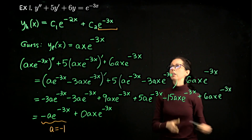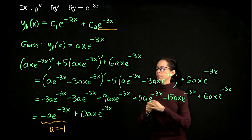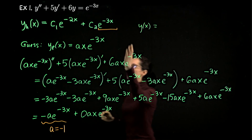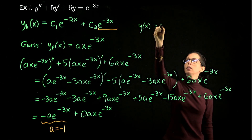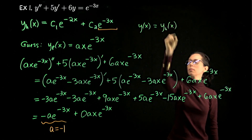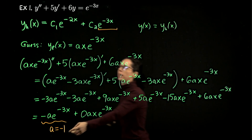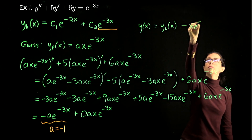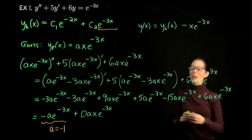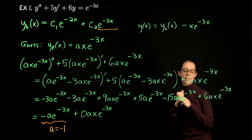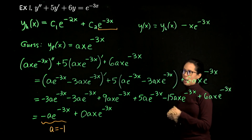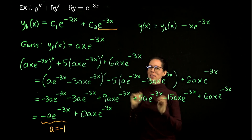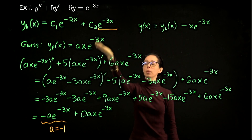So the general solution to this differential equation, y(x), is the homogeneous solution plus the particular solution: minus x·e^(−3x). This example showed us how to address the situation when we have a forcing function which is exponential, but our homogeneous solution also has exponential components and one of them is duplicated.